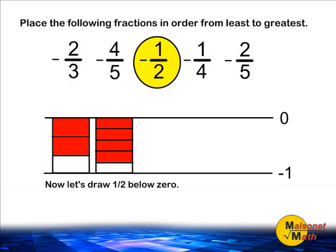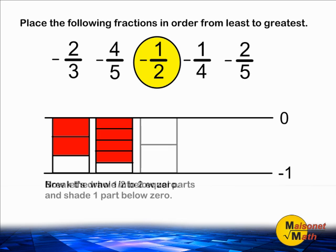Next, we diagram negative one-half. We basically make one whole box and divide it into two equal parts and then just shade one unit below zero.